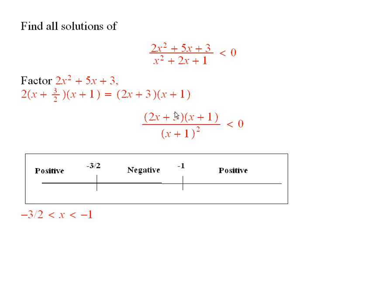You see, this quotient here is negative in here, between negative 3 halves and negative 1. It's positive if x is bigger than negative 1, and it's also positive down here. So the solution would be minus 3 halves less than x less than minus 1 half.